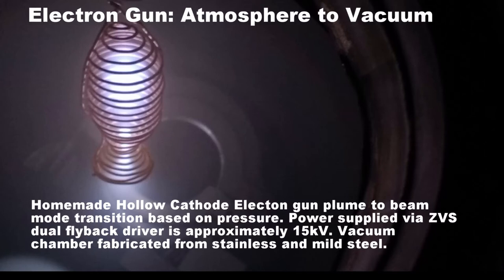In this video, I will be showcasing a hollow cathode electron gun that I built in my home lab. I display the transition from atmospheric pressure to medium vacuum pressures in the first half of the video. In the second half, I adjust the input power to the system to adjust the properties of the gun.